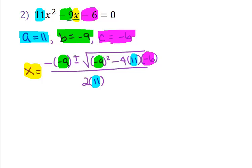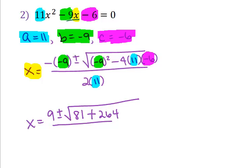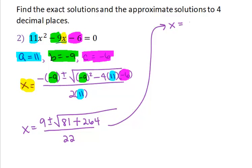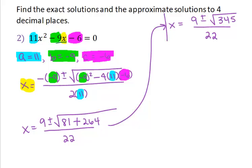Simplifying: x equals 9, plus or minus the square root of 81 — and since we have a negative times a negative, that gives a positive — 4 times 11 gives 44, times 6 gives 264. This is all over 2 times 11, which is 22. That gives us x equals 9 plus or minus the square root of 81 plus 264, which is the square root of 345, all over 22. The square root of 345 does not simplify using our prime factorization method, so these are our exact solutions.